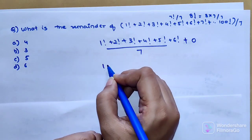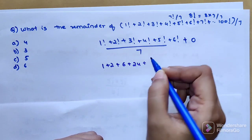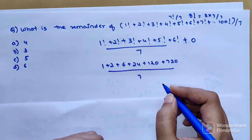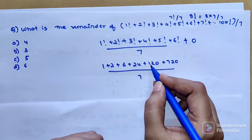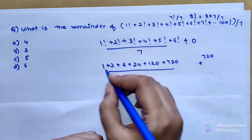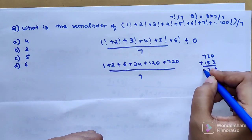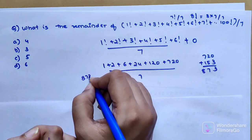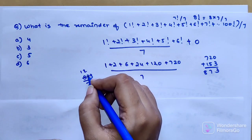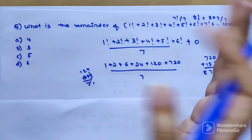1! is 1, 2! is 2, 3! is 6, 4! is 24, 5! is 120, and 6! is 720. We divide that by 7. 720 + 150 + 3 = 873. We divide it by 7. 7 × 124 is 868, so we subtract 28 from 33, and what we're left with is 5. So the remainder is 5.